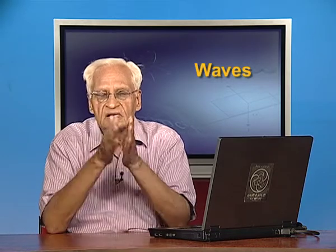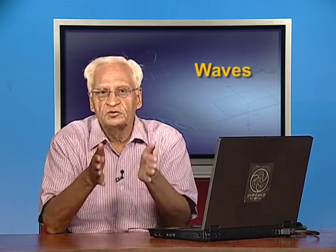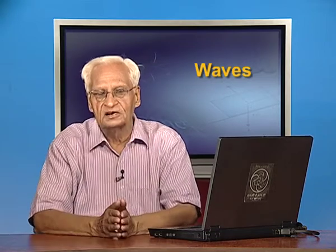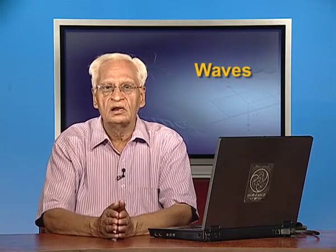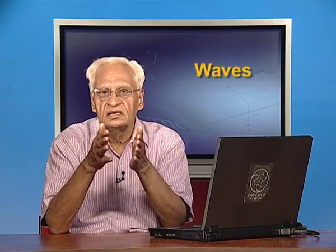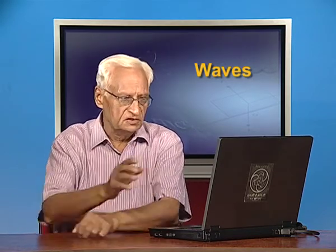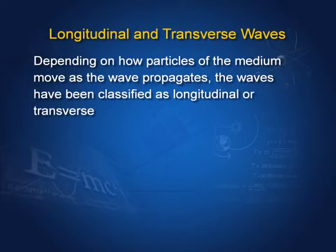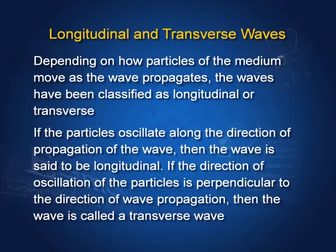So we have two kinds of waves: longitudinal waves and transverse waves. Depending on how particles of the medium move as the wave propagates, the waves have been classified as longitudinal or transverse. If the particle oscillates along the direction of propagation of the wave, then the wave is said to be longitudinal. If the direction of oscillation of the particles is perpendicular to the direction of wave propagation, then the wave is called a transverse wave.